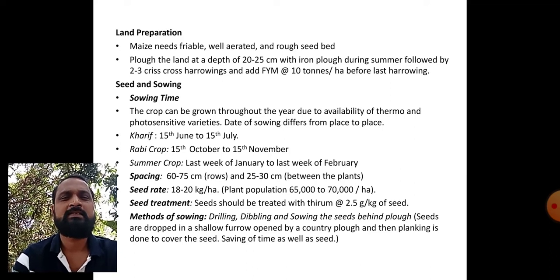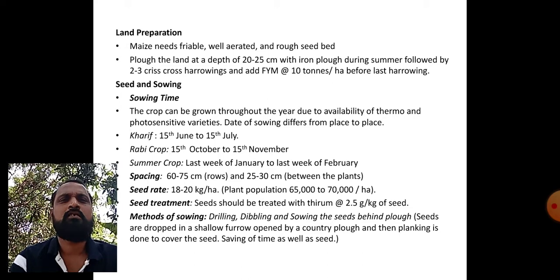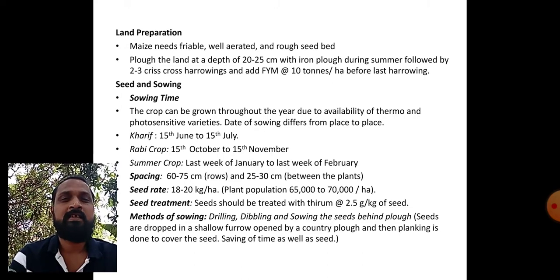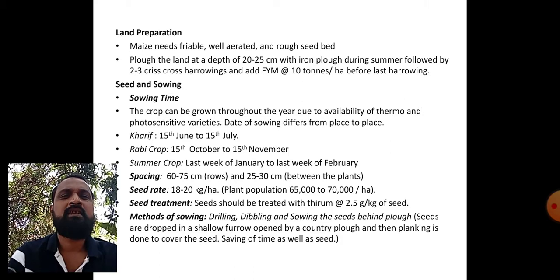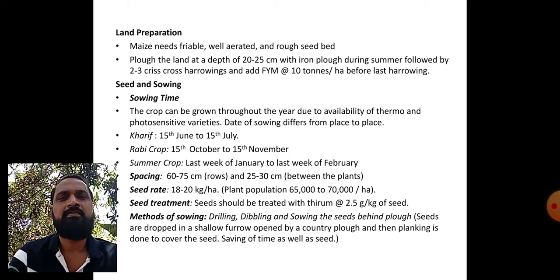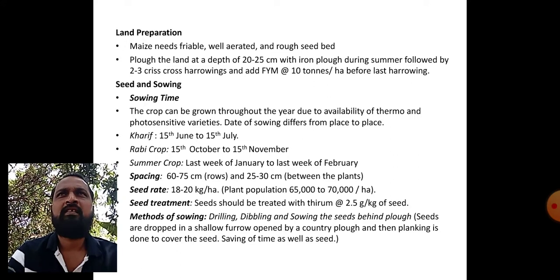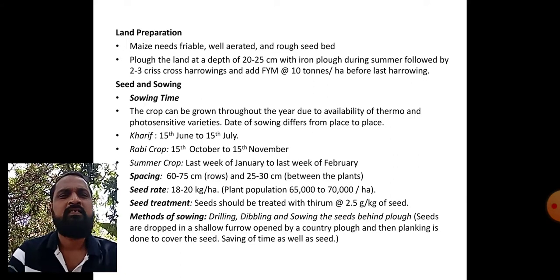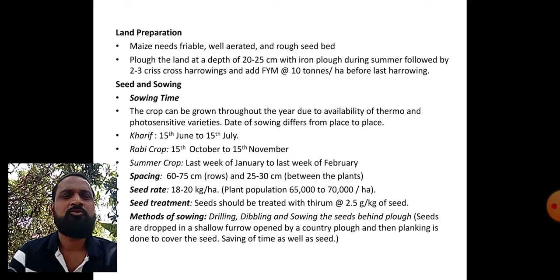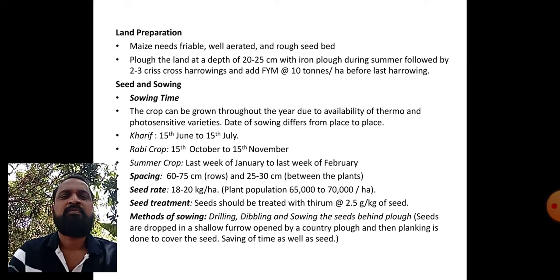Land preparation: maize comes under bold-seeded crops and needs a viable, well-aerated, and rough seed bed. Plough the land at a depth of 20 to 25 centimeters with an iron plough during summer season, followed by two to three crisscross harrowings. Add FYM at 10 to 15 tonnes per hectare before the last harrowing to mix it properly into the soil.